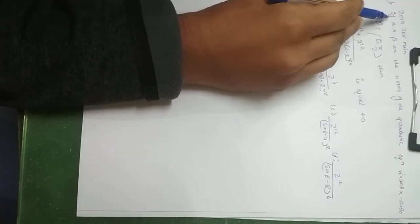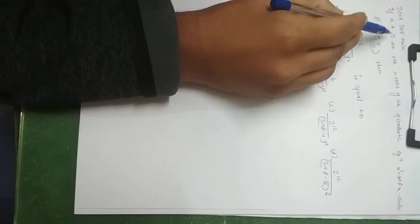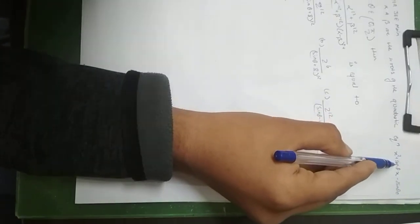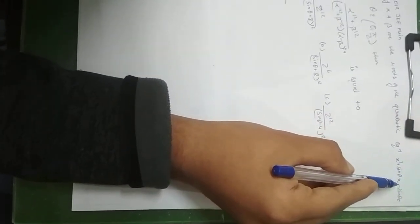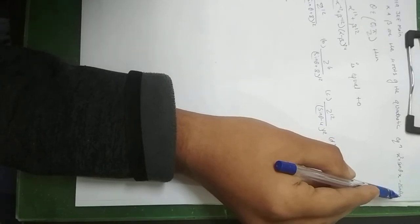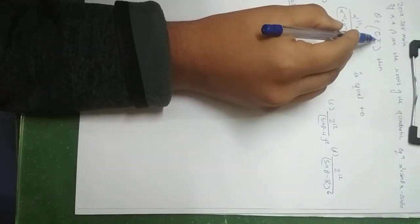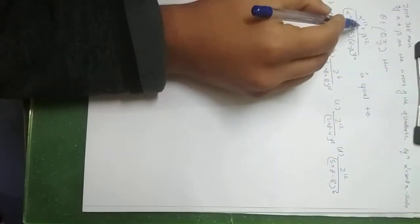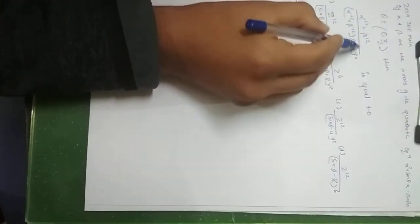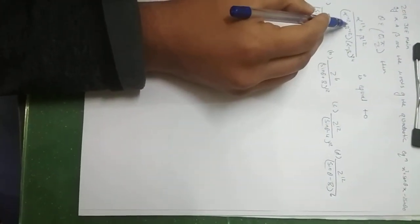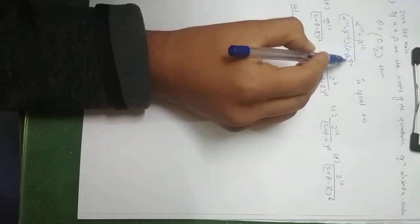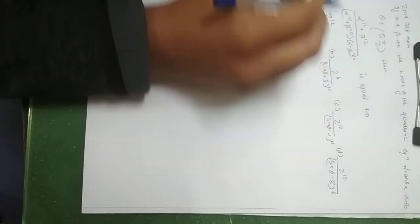In this question, if alpha and beta are the roots of the quadratic equation x² + sinθ·x − 2sinθ = 0, where theta belongs to 0 to π/2, then find: (α¹² + β¹²) / (α⁻¹² + β⁻¹²) · (α − β)²⁴. And then we have options.